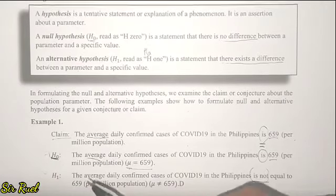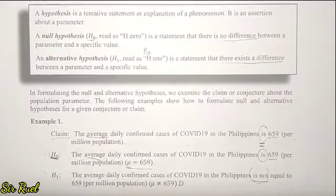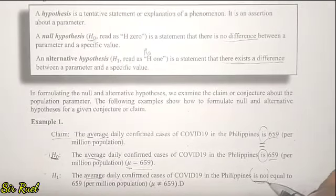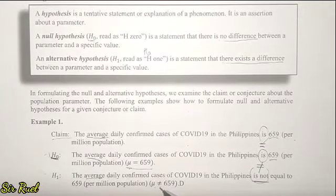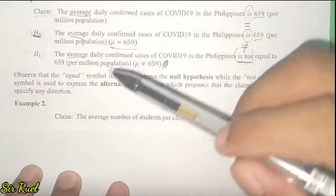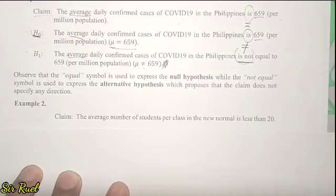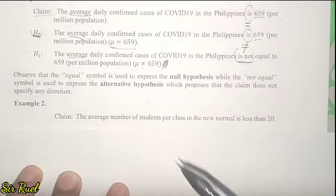For the alternative hypothesis, we write H1 or HA with a colon. Since the parameter is average, we use the population mean symbol μ. 'Is not' is equivalent to the not-equal symbol, and the value is 659. So: H1: μ ≠ 659. As observed in this example, the equal symbol is used to express the null hypothesis, while the not-equal symbol is used to express the alternative hypothesis — when null uses equal, alternative uses not-equal.